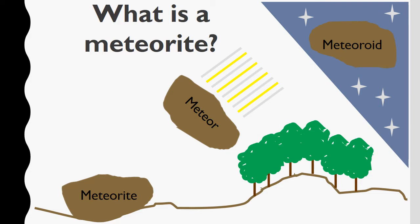A meteor can start out as a meteoroid, asteroid, or comet, and as it passes through the atmosphere it creates a streak of light. Every day, millions of meteors enter the Earth's atmosphere. The object can change and shrink as it travels to the surface. But if that material doesn't burn up in the atmosphere and actually makes it to the surface of the Earth, the name is updated to a meteorite. So a meteorite is when a meteor makes contact with the Earth.